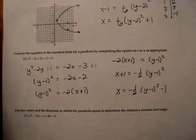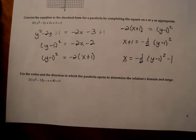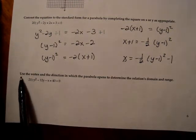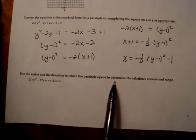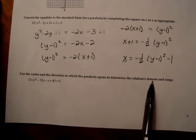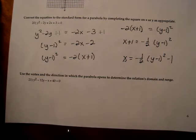Okay. Now we have one more question about parabolas. Let's read number 21. Use the vertex and the direction in which the parabola opens to determine the relations domain and range. Okay, so first I need to figure out what the vertex is and which direction it opens.